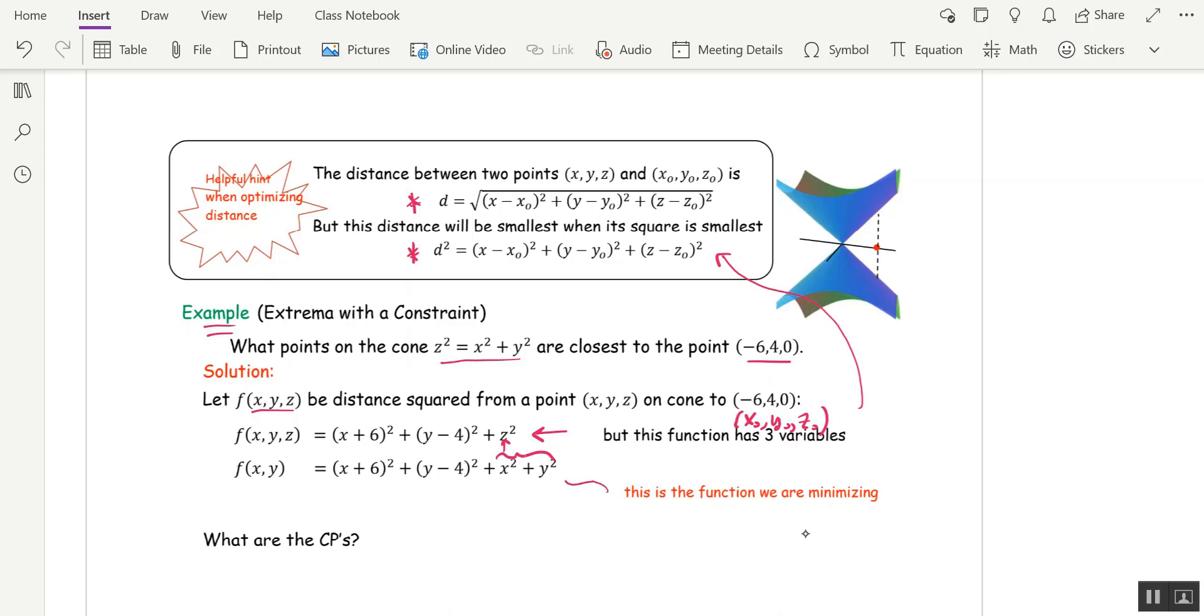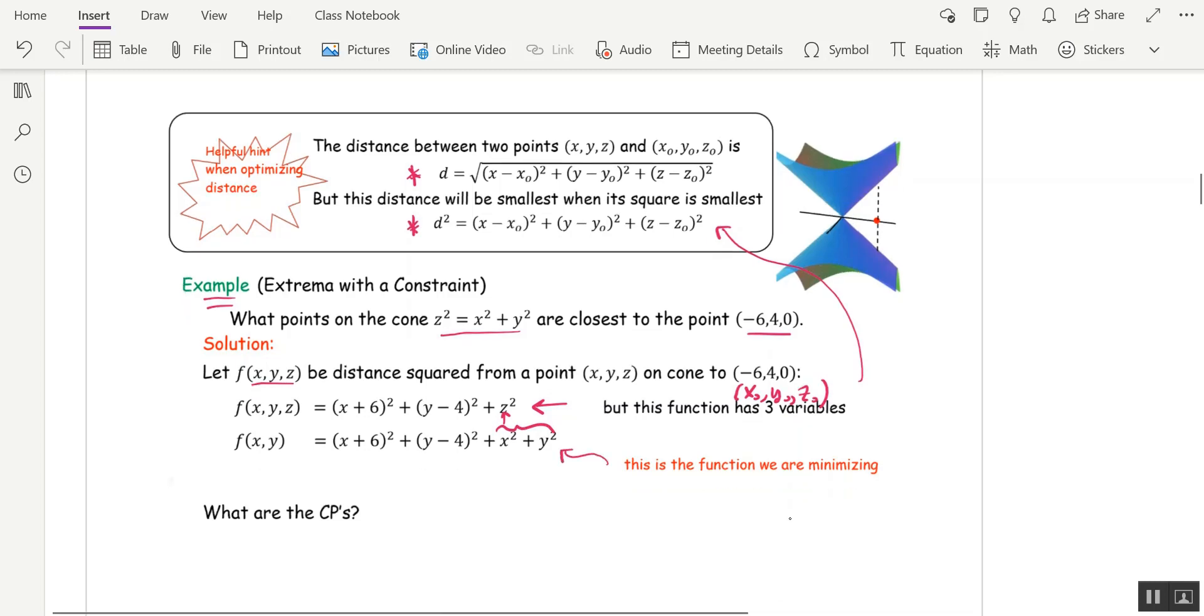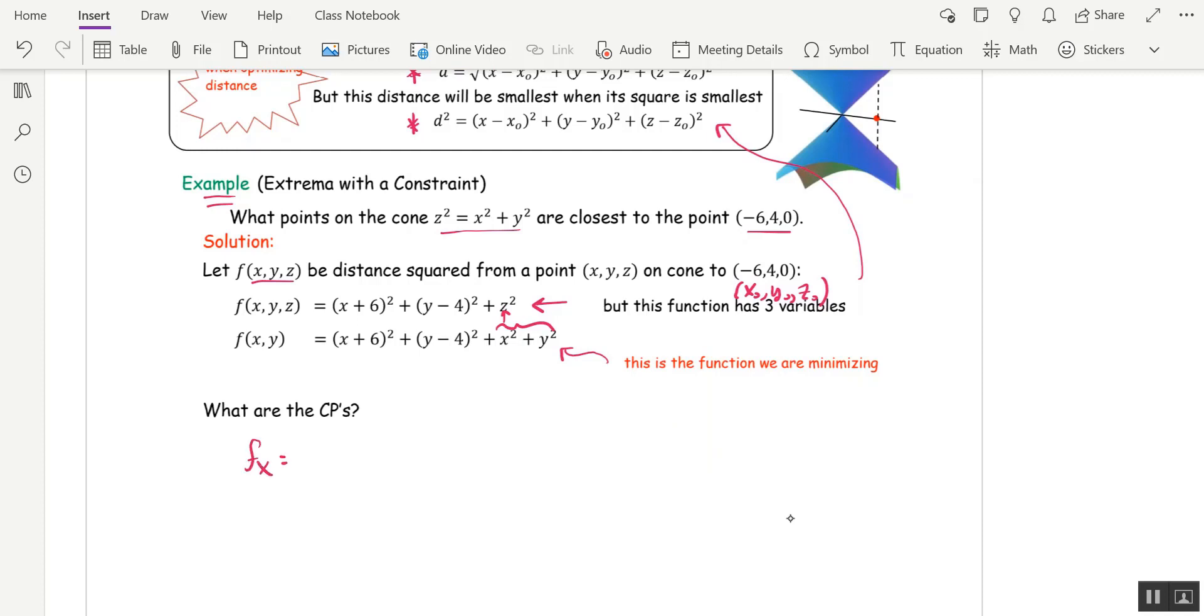All right. So this is the function we're minimizing. So let's find the critical points. F sub x is, rather than multiply out this term, I'm just going to use the chain rule, 2x plus 6, and then plus 2x. And that's 4x plus 12, and I want to set that equal to 0. So f sub y is 2y minus 4 plus 2y, and that's equal to 4y minus 8. And again, I want to set that equal to 0.